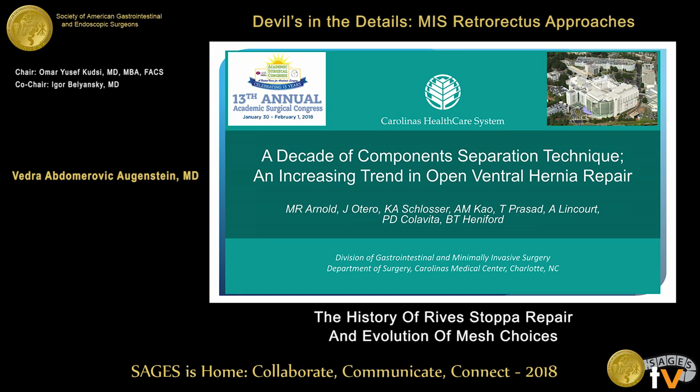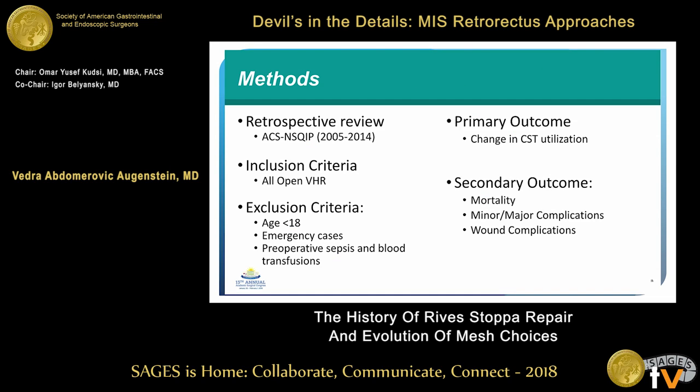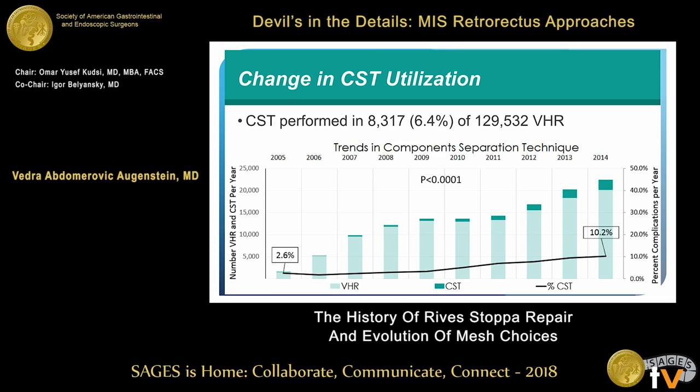One of our research fellows, Michael Arnold, presented this at the Academic Surgical Congress recently. He looked at the NIS database and reviewed the last 10 years of component separations. We saw an increase: even in 2014, only 10% of ventral hernia repairs are being done with a component separation, but that's a significant increase from 2005 when it was only 2.6%.